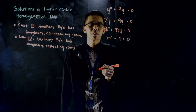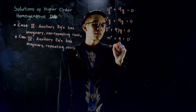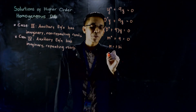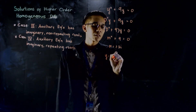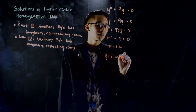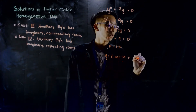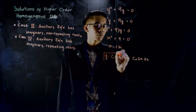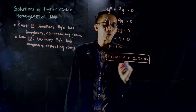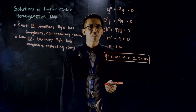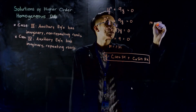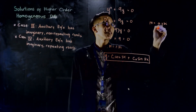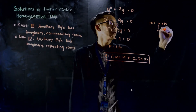The roots of this auxiliary equation are m equal to positive/negative 3i. For this differential equation, the solution is given by y equals c₁ cosine 3x plus c₂ sine 3x. Take note that if a differential equation yields an imaginary number that has a real part — let's say m equals a plus/minus bi — then a is the real part and b is the imaginary part.